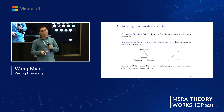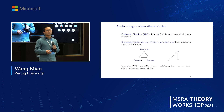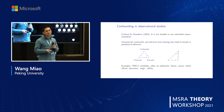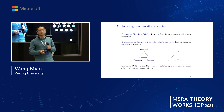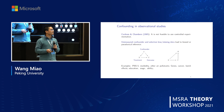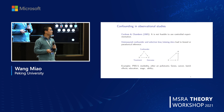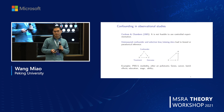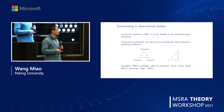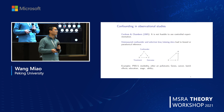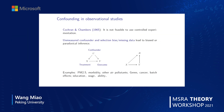In a big data era, a major source for scientific research is observational studies — where research observes an individual and it is not feasible to use controlled experimentation. There are two big challenges for observational studies: the first is confounding, and the second is selection bias and missing data. They both lead to biased or even paradoxical inference.